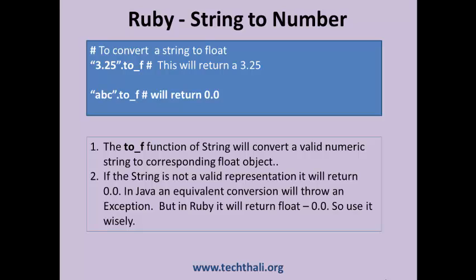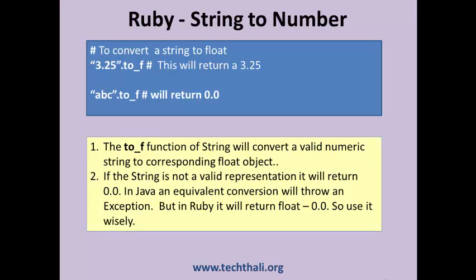This slide covers how we can convert a string object to a float. The to_f method in this example will return 0.0 in case it fails to convert, so use it carefully. In Java, such methods will result in exceptions, which is a more sensible behavior.